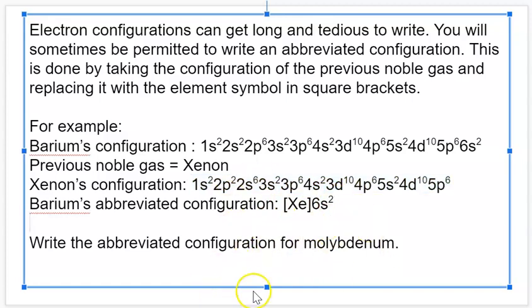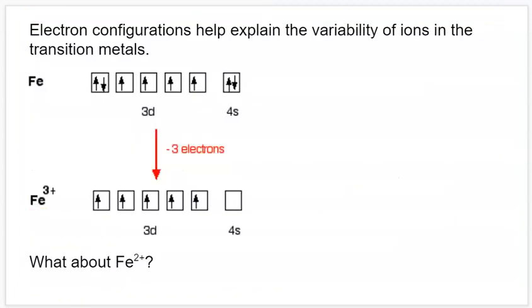As practice, try writing an abbreviated configuration for molybdenum. We showed the full electron configuration a few slides back, so start there, figure out what the previous noble gas would be, and then use that to build off of.